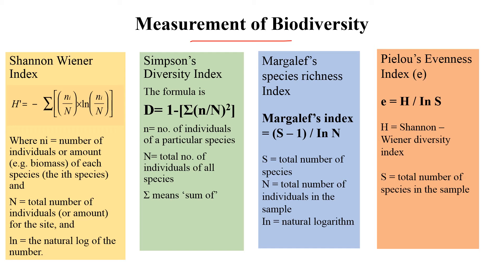Now regarding the measurement of biodiversity — I'll introduce some species diversity indices here. The detailed sampling techniques and methods will be discussed in a separate video later on. The four very commonly used indices in biodiversity measurement are: the Shannon-Wiener diversity index, the Simpson diversity index, the Margalef species richness index, and Pielou's evenness index.